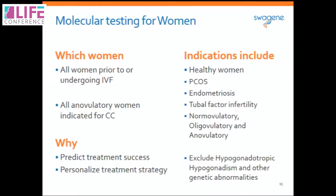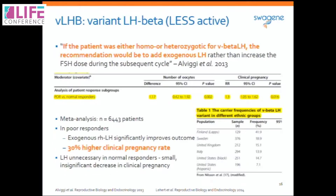Ideally, personalized medicine would be applied a priori — when women attend the clinic, you would look for genetic variations before initiating or deciding on treatment strategy. This allows you to predict treatment success and personalize the approach for each patient. Over two decades there is now substantial literature covering healthy women in oocyte donation programs, women with PCOS, endometriosis, tubal factor infertility, and across the spectrum from normovulatory to anovulatory. Regarding variant LH-beta, this variation leads to a less bioactive form of luteinizing hormone; if detected, you would include LH in addition to exogenous FSH in the ovarian stimulation protocol.